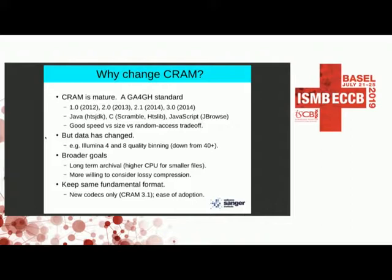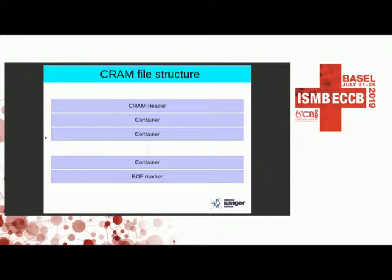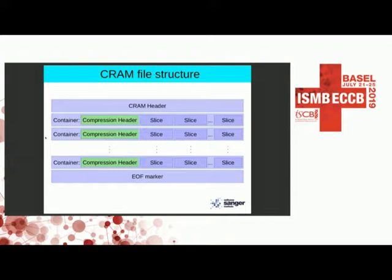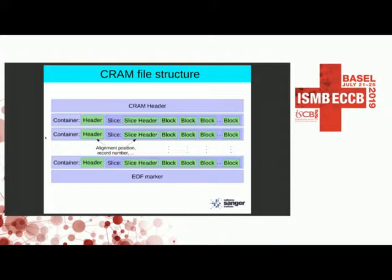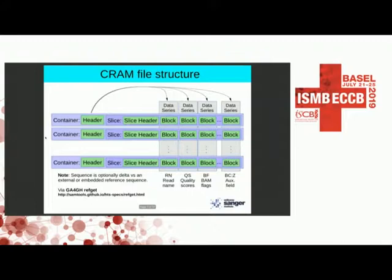A CRAM file is simply a series of containers bookmarked at either end by a header and a footer. Each container has one or more slices, and each slice has one or more blocks. Both the container and slice have headers — small pieces of metadata used for random access, querying, and introspection of the data file. The blocks are where the bulk of the data is stored.